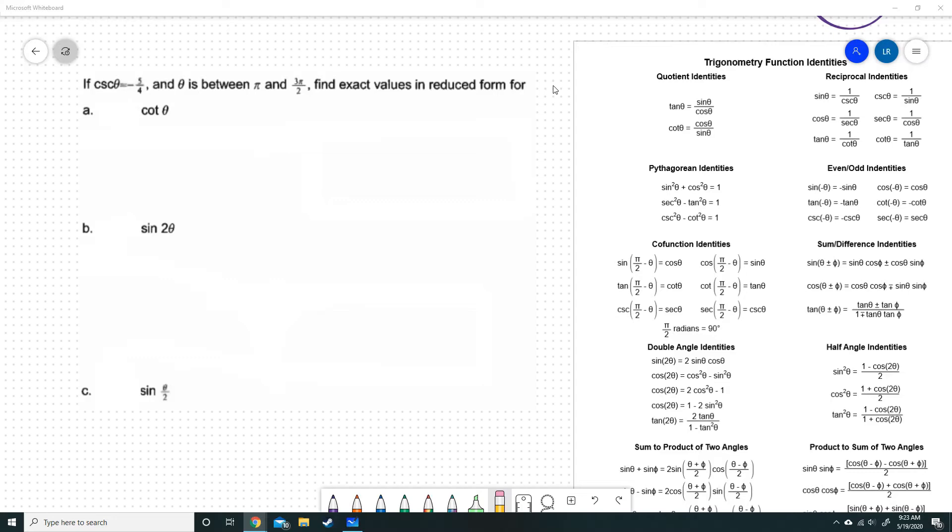In this episode, we're going to do a little bit more right triangle trig, and then we are going to go into the half and double angle properties. So if cosecant of theta equals negative 5 over 4, and theta is between pi and 3 pi over 2, we're going to find the exact values in reduced form for each of the following.